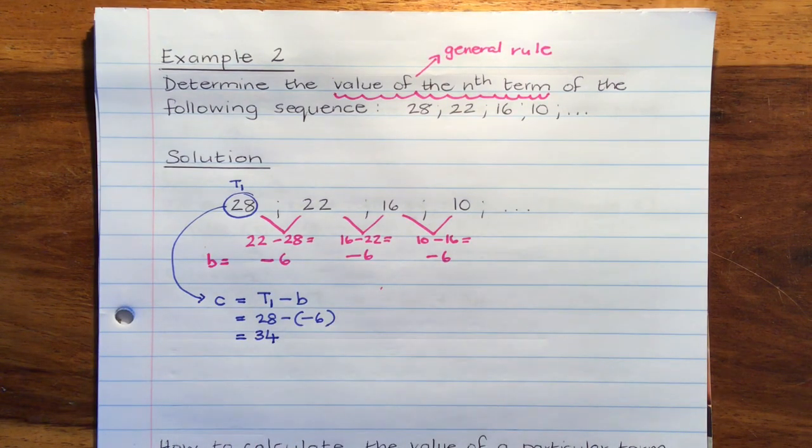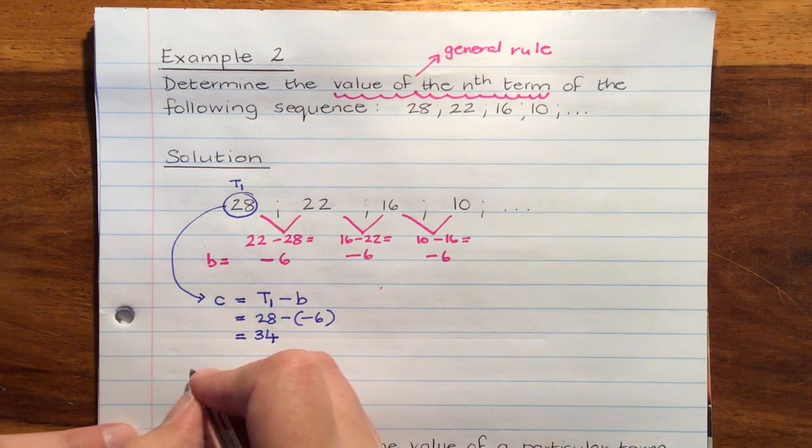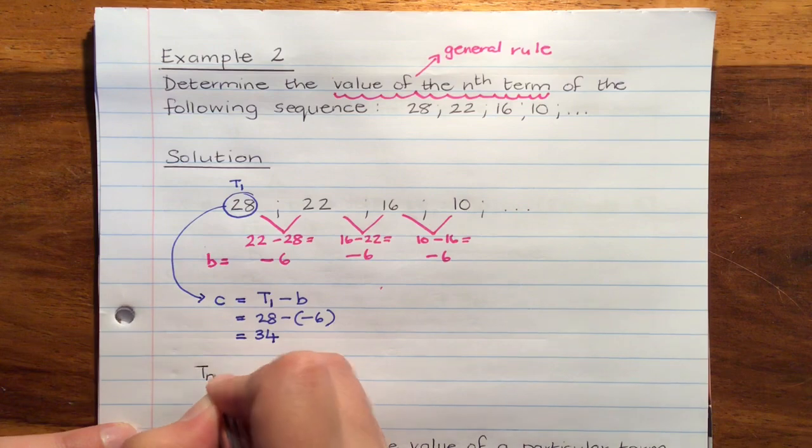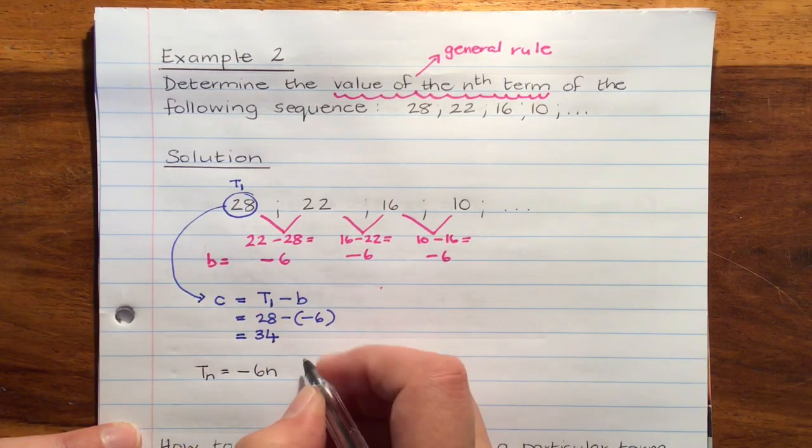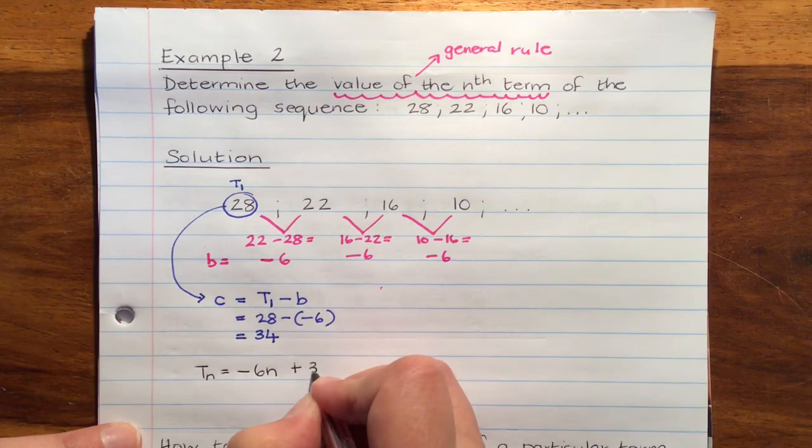And then we can substitute these into the equation. The formula, Tn equals B negative 6n plus C, so plus 34.